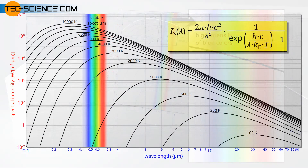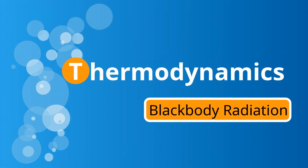The mathematical description of blackbody radiation is given by Planck's law, which is explained in more detail in another video. We hope you enjoyed the video and found it helpful. Thanks for watching.